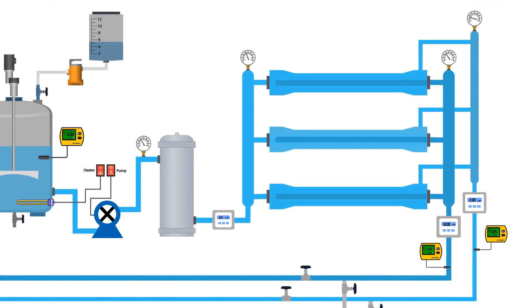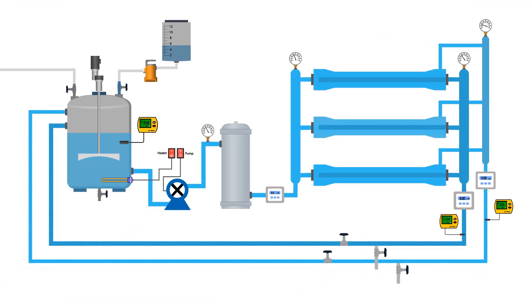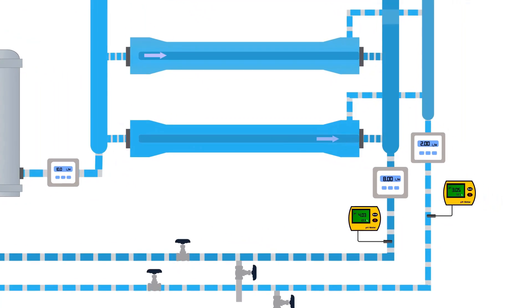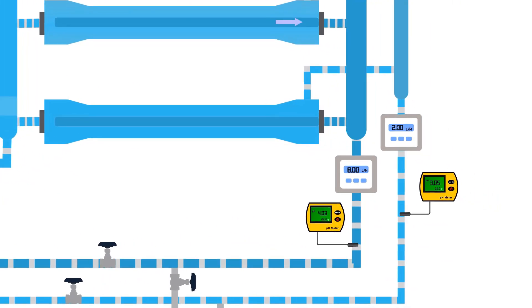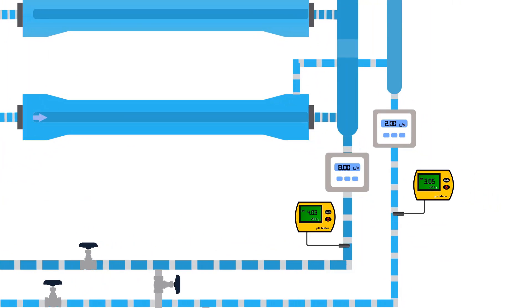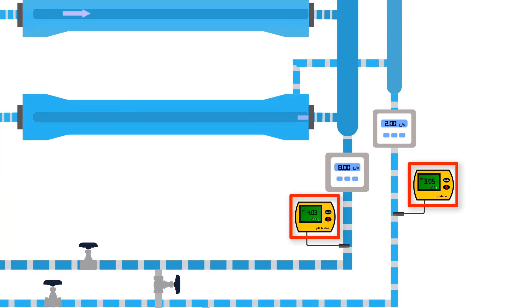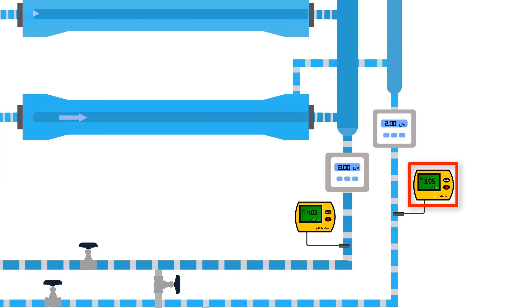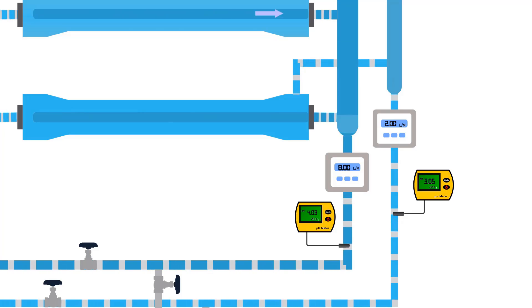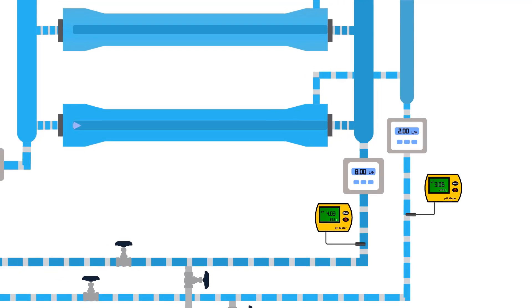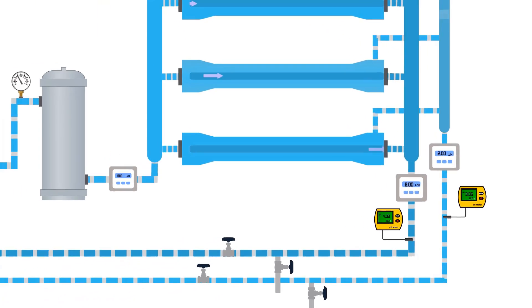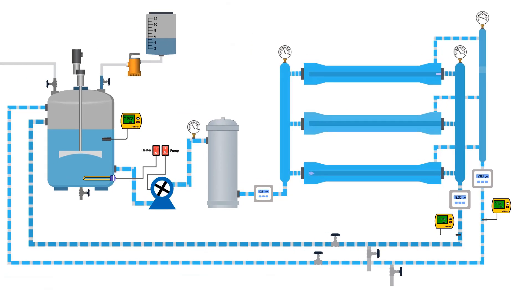After 30 minutes, turn on the pump again to continue the cleaning process. When the pH of both the permeate and reject reaches 2, it means the calcium and magnesium content has been removed from the membranes. That's all about the acidic treatment of RO membranes.